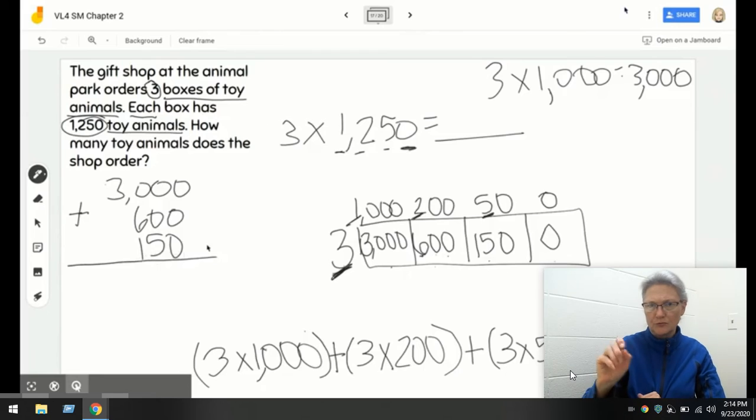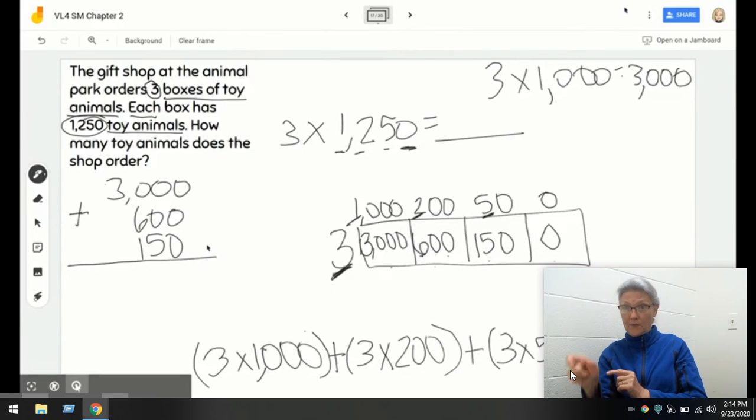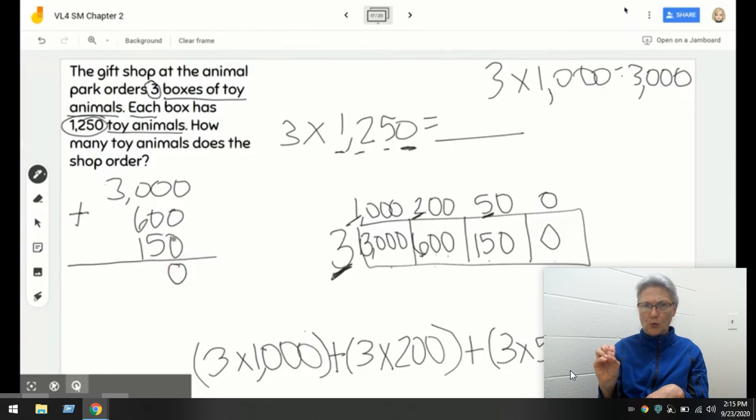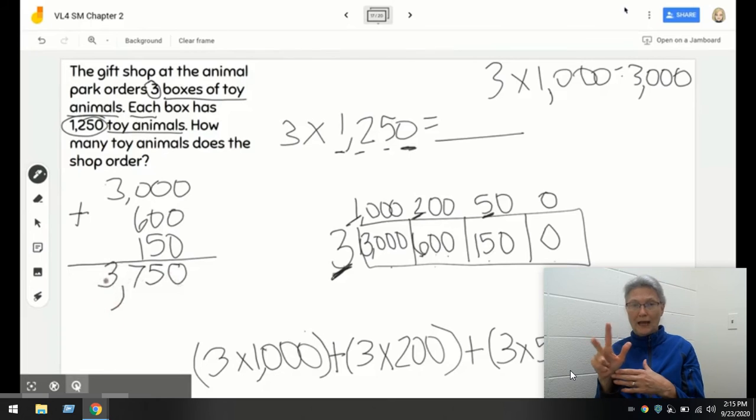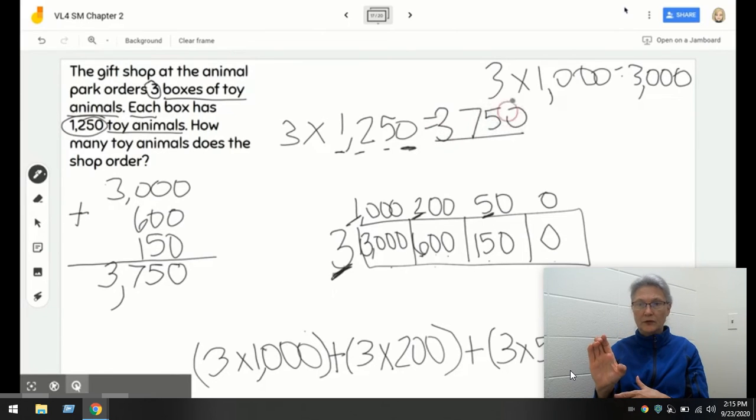Starting in my ones column, just in case there could be a group of 10 hiding in there. Zero plus zero plus zero. Five tens plus zero tens plus zero tens is five tens. Six hundred plus one hundred is seven hundred. And three thousand plus no other thousands equals three thousand. I'm going to go ahead and put my comma there. This tells me that my product is three thousand seven hundred fifty.